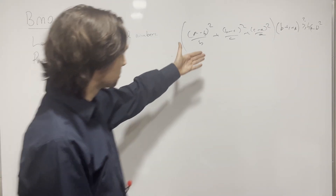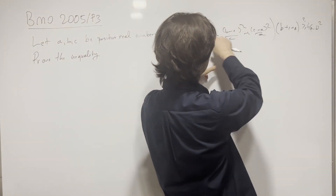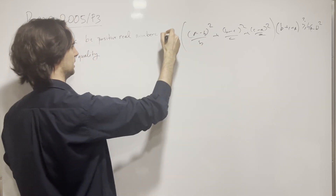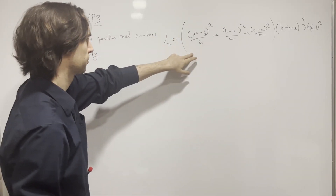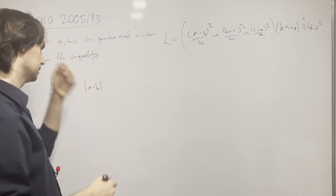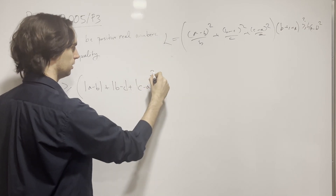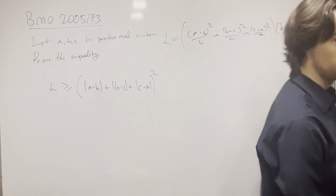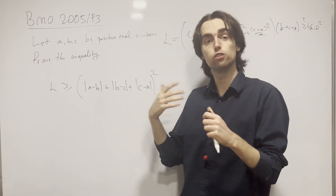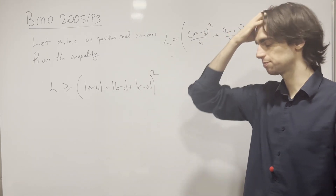This reminds me of Cauchy-Schwarz! This is the form that Cauchy-Schwarz takes. We have (a−b)²/b times b — call the left-hand side L. L is greater than or equal to — we write this as |a−b| + |b−c| + |c−a|, everything squared. It holds for the absolute value. With absolute values it's stronger, and you can assume the stronger inequality. So we're left to prove this is greater than or equal to 4(a−b)².